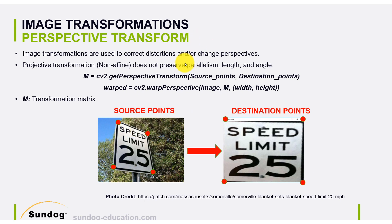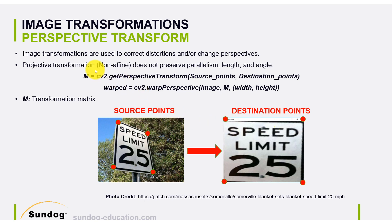Just to summarize: here we are performing what we call a projective transformation. This is a non-affine transformation, which doesn't preserve parallel lines, length, or angle. Lines that are not parallel can be forced to become parallel — that's the non-affine or projective transformation. In a very simple form: we provide the source points, destination points, obtain the transformation matrix, and then use warpPerspective with the matrix and the image to get the warped image. Let's shift to the Jupyter Notebook and apply it right away.